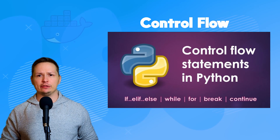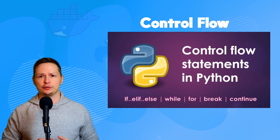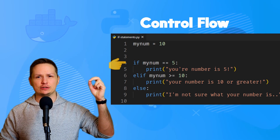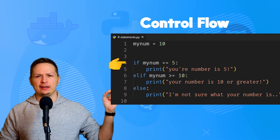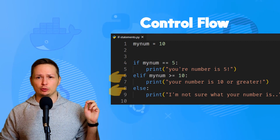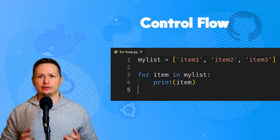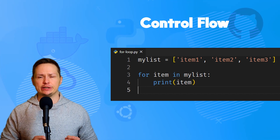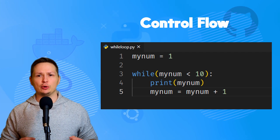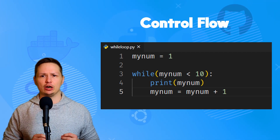The next important thing to understand is control flow — mainly if statements, for loops, and while loops. If statements work as if/elif/else: if a condition is true it performs a block of code, if another condition is true it performs that block, and if nothing is true it executes the else block. For loops iterate through a list of items and execute a block of code for each item. While loops execute code as long as a condition remains true.